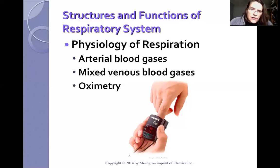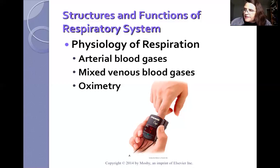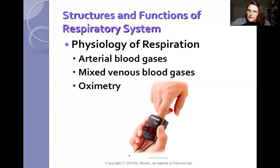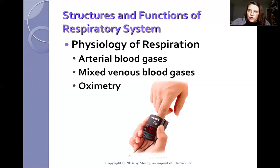Arterial blood gases — ABGs — determine the oxygenation status and acid-base balance of the patient. ABGs include measures of PaO2, PaCO2, acidity or pH, bicarbonate in the arterial blood, and O2 saturation, which can be measured directly or via a finger probe. You should know your normal ABG values — that's good general nursing practice.